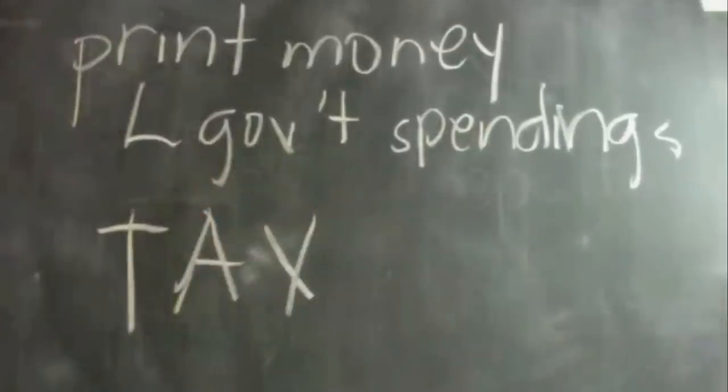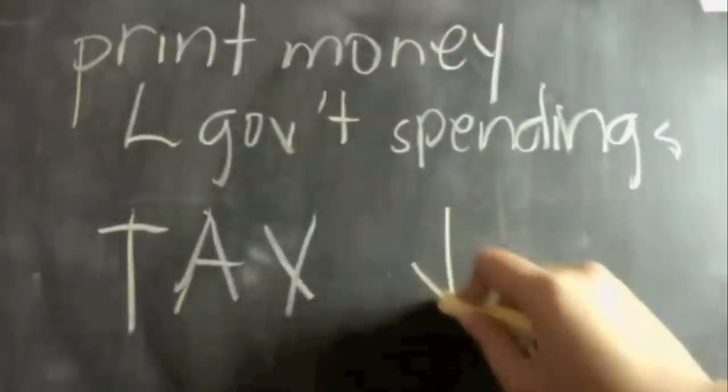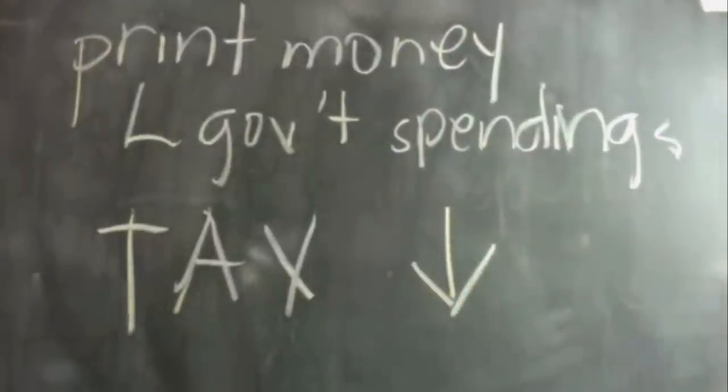Therefore, in seniorage, since the government is able to print enough money, they would not bother implementing or imposing tax anymore to their citizens, so taxation goes down.